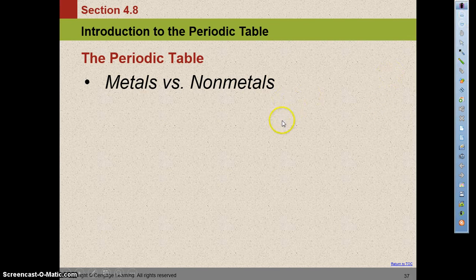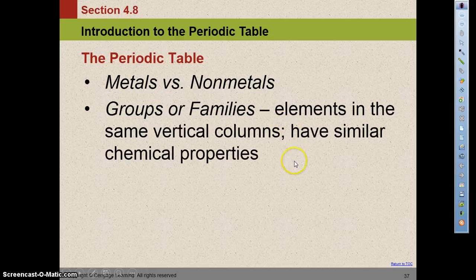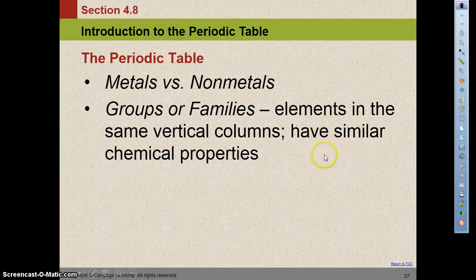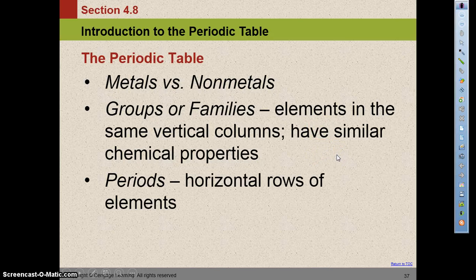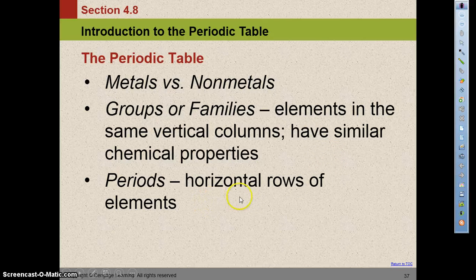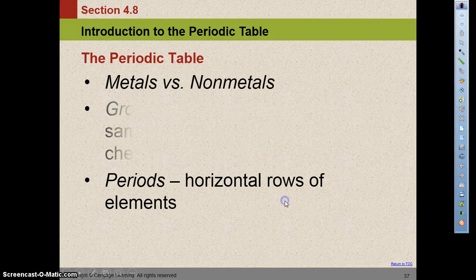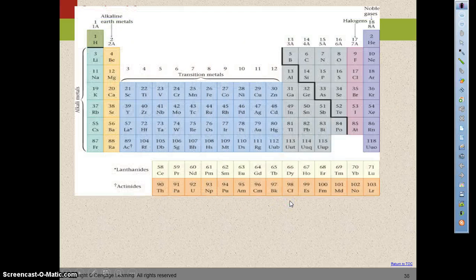Let's take a look at metals versus non-metals and groups or families. Groups or families are elements in the same vertical column. They have similar chemical properties. Periods are the ones that go horizontally in rows of elements. The metals and non-metals are pretty obvious once we look at the picture of a periodic table.